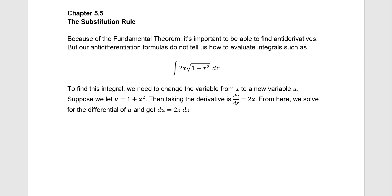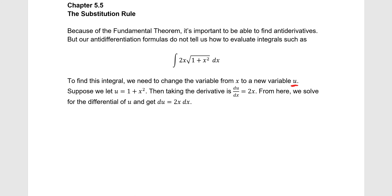We're going to change the variable from x to a new variable, u. For this particular example, we're going to let u equal 1 plus x squared — notice that's what's inside the square root. If we take the derivative of u with respect to x, we get du/dx equals 2x, since the derivative of 1 is 0 and the derivative of x squared is 2x. Solving for du by multiplying dx to the right, we get du equals 2x dx.